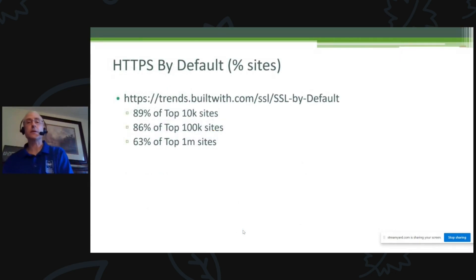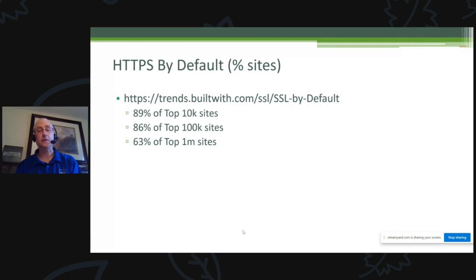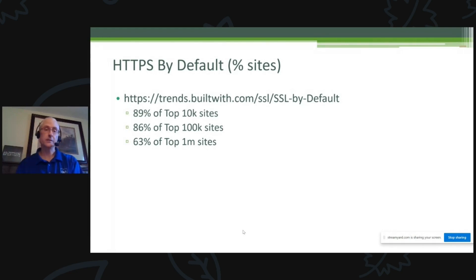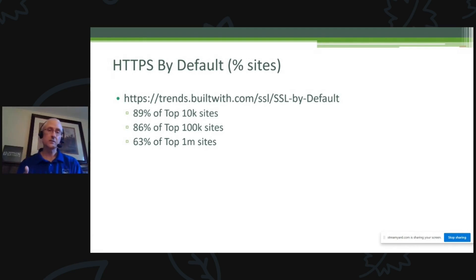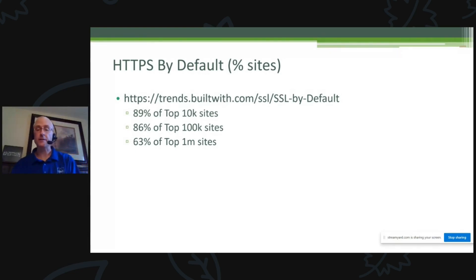HTTPS by default has been growing a lot in the last few years. You can check out a particular website that has a breakdown of what percent of the top sites actually use HTTPS by default — if you connect using HTTP, they bump you up to HTTPS. If you look at the graph across the years, it's really grown recently. Spread out to every internet website, it becomes single digits, meaning there's a ton of sites that still don't use it at all.